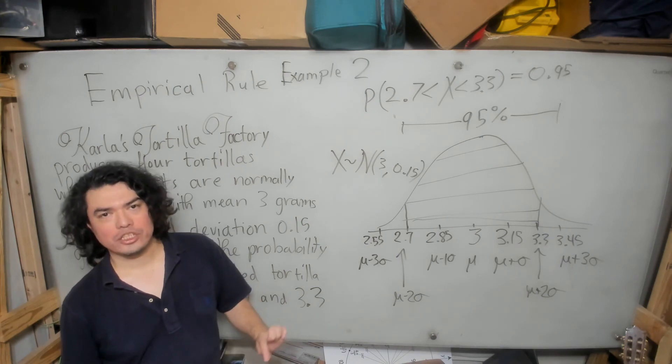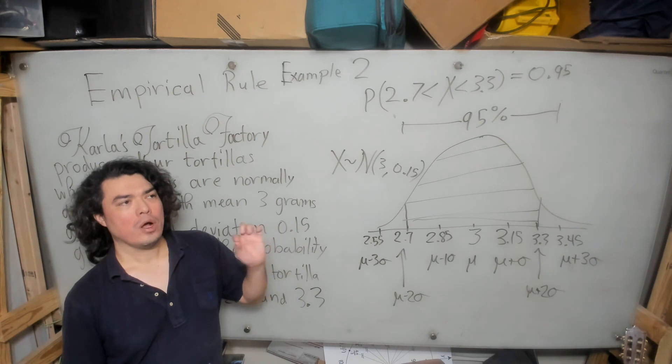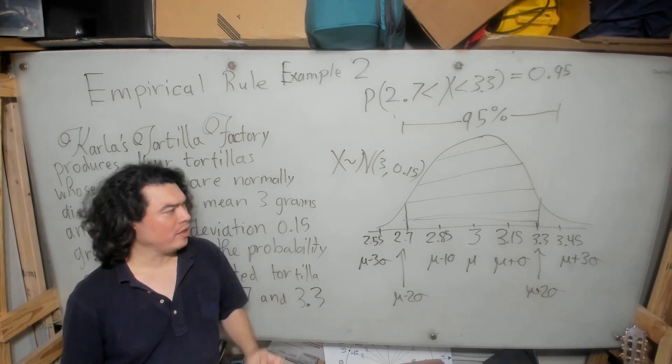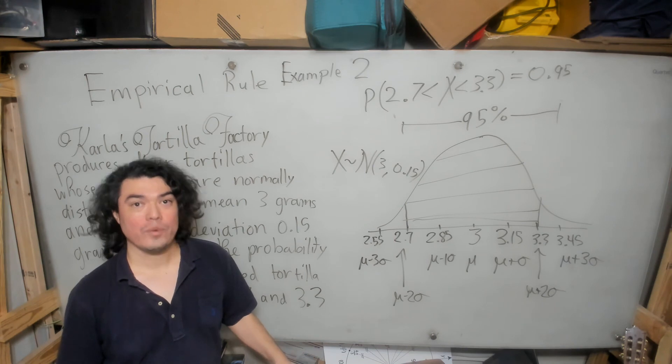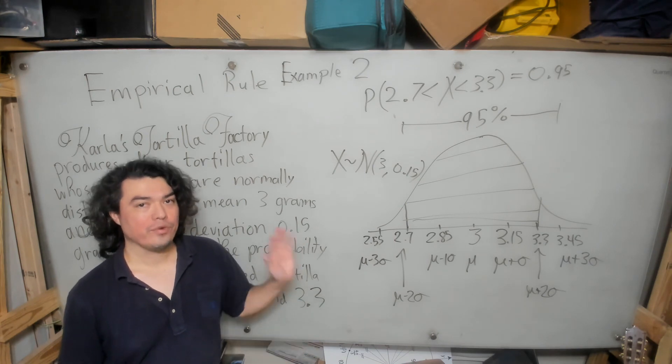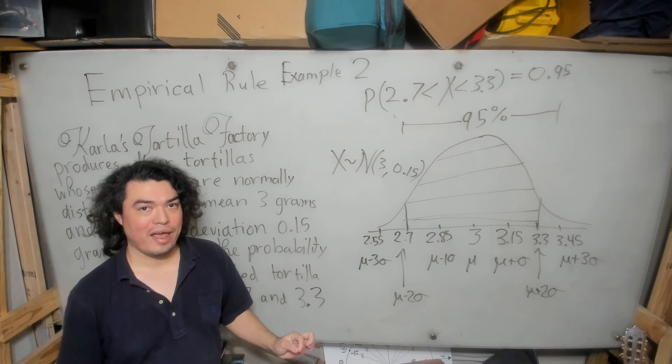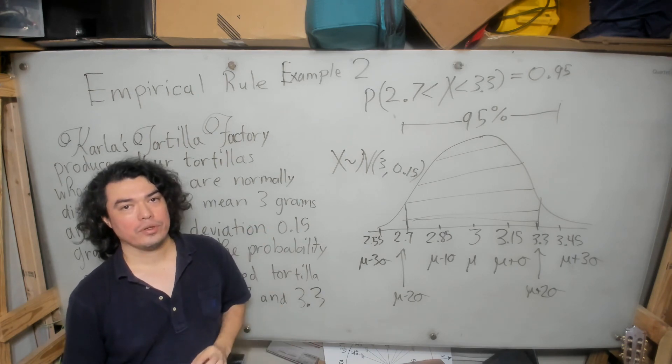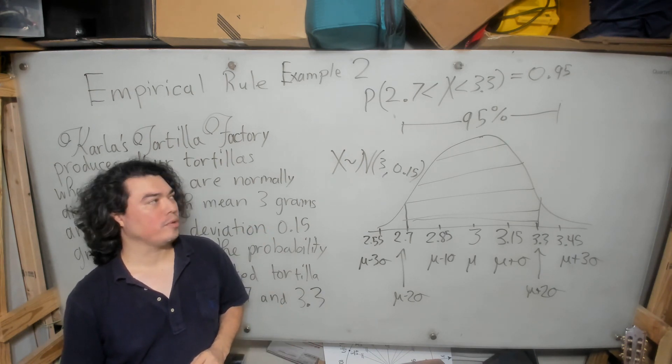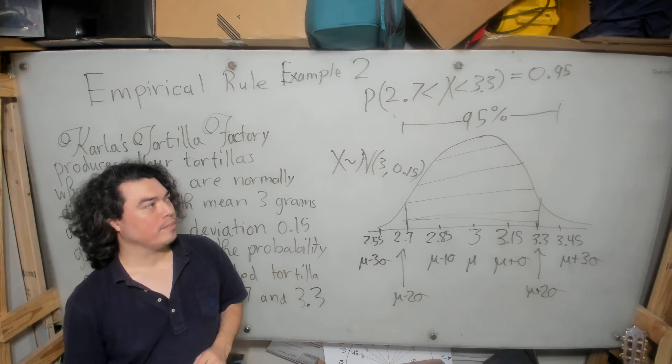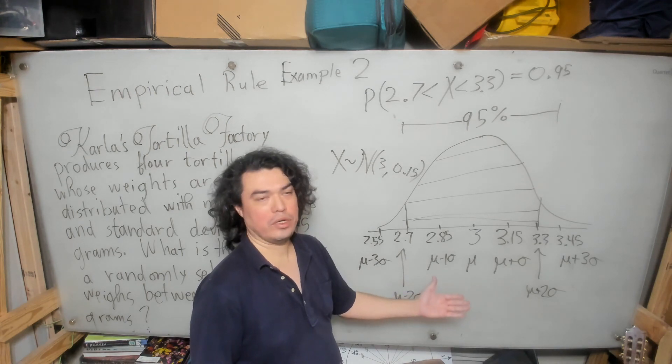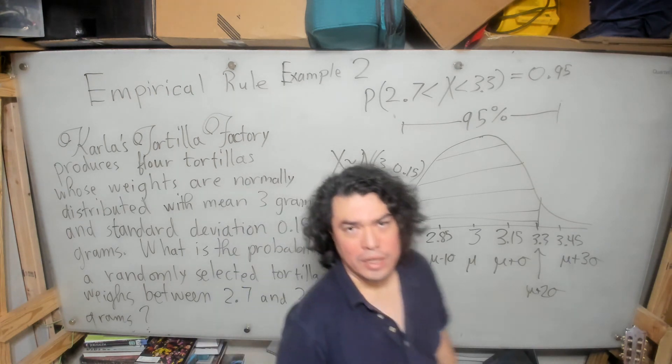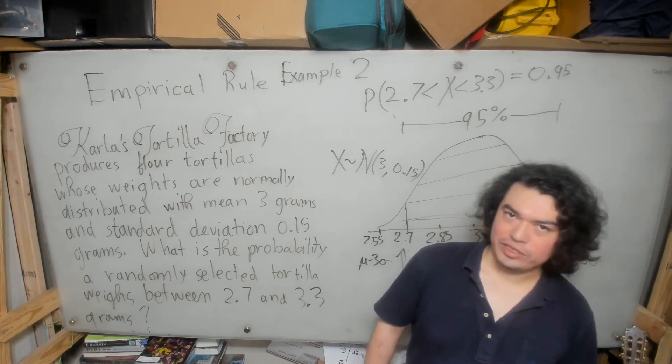In other words, to summarize that discussion, what I'm saying is that although we will be able to solve this problem, to find the probability that a randomly selected tortilla will weigh between 2.7 and 3.3 grams, although we'll be able to calculate the probability without using the empirical rule, by drawing the figure, we're able to see that the empirical rule applies, and we're able to calculate the probability with great ease if we know the empirical rule, and I just think that that's more efficient. And it would only have become possible if we had drawn the figure. Anyway, let's move on to the next problem, and I hope that you've enjoyed this discussion.